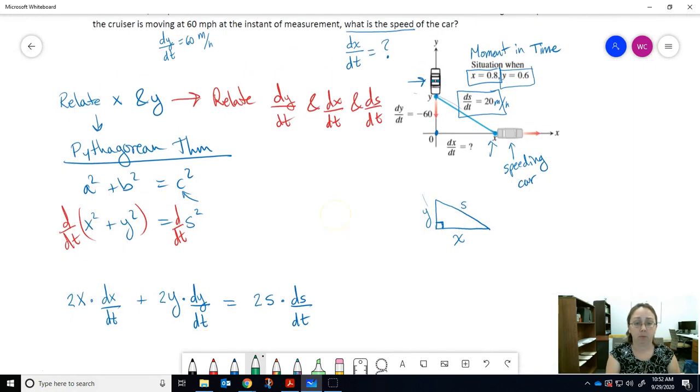We were looking for dx/dt, we're trying to find that. dy/dt they gave us, they said that was 60 miles per hour, the rate the police car is chasing the other one. That's the rate of change of the police car. And then ds/dt, they use the radar to figure out that that is 20 miles per hour.